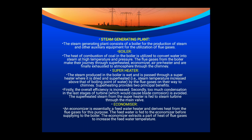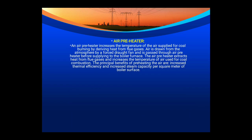An economizer is essentially a feed water heater that derives heat from the flue gases. Feed water is fed to the economizer before supplying to the boiler; the economizer extracts part of the heat from flue gas to increase feed water temperature and boiler efficiency. An air preheater increases the temperature of air supplied for coal burning. Air is drawn from the atmosphere by a forced draft fan and passes through the air preheater before being supplied to the boiler furnace. The principal benefits of preheating the air are increased thermal efficiency and increased steam capacity per square meter of boiler surface.